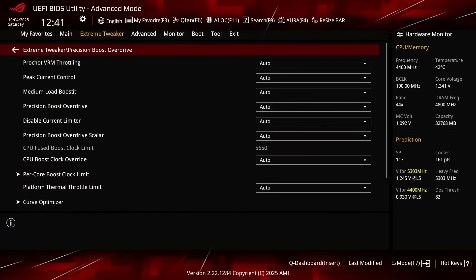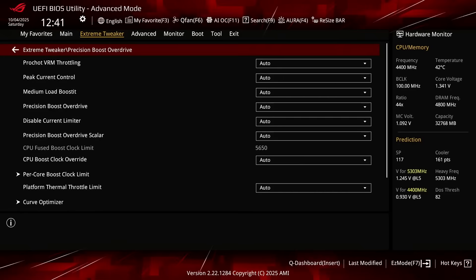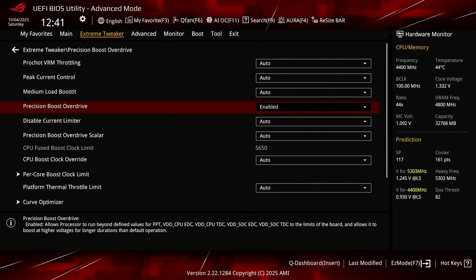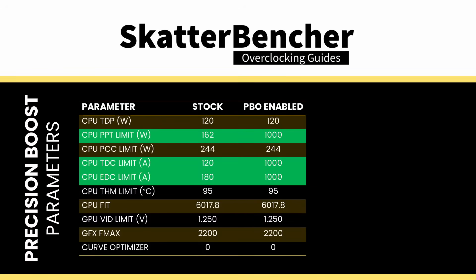Enter the Precision Boost Overdrive submenu. Here we can use the AMD Precision Boost Overdrive 2 toolkit to increase the power, current, and frequency headroom of the Precision Boost 2 boosting algorithm. Set Precision Boost Overdrive 2 to enabled. This adjusts the PBO platform parameters — PPT, TDC, and EDC — according to the motherboard's own rules. On this motherboard, we find that the following values have changed.